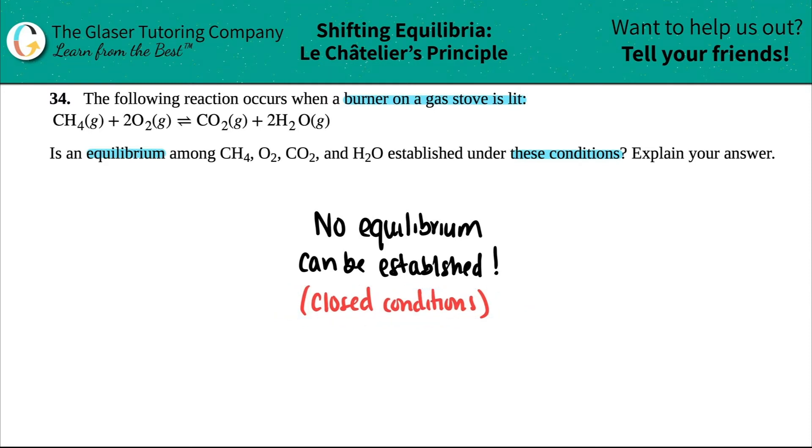You need to keep these reactions under lock and key. You have to have them closed, and that way you can manipulate what's going on, whether you're increasing the pressure, decreasing the pressure, the volumes, the temps.